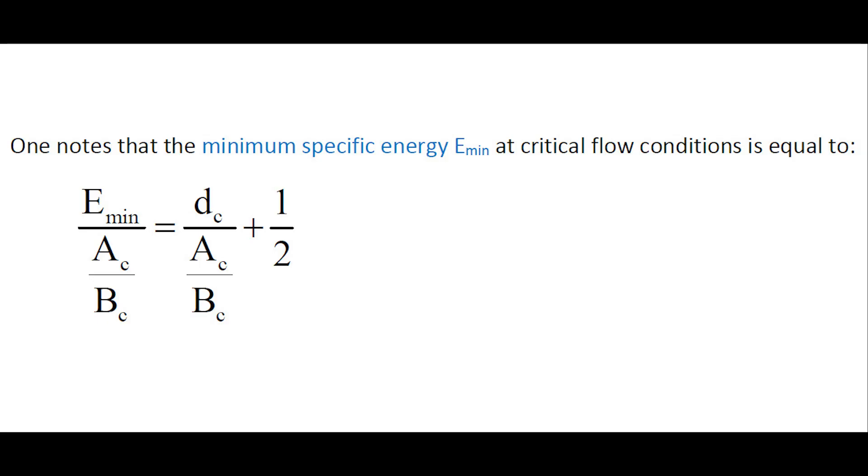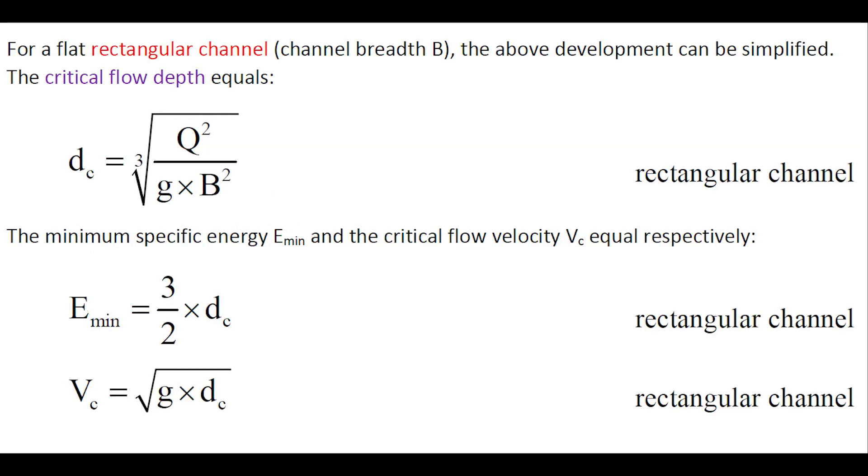One notes that the minimum specific energy at critical flow condition can be expressed as shown here, and for a flat rectangular channel of width B, this expression can be simplified, and the critical flow depth in a rectangular channel is dc = ∛(Q²/(g×B²)).